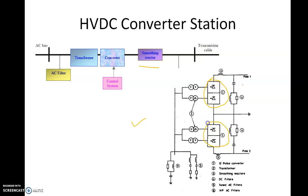These are basically the power electronic switches or converters which convert AC into DC. Then there are transformers — star-delta, with star on one AC side and delta on the other side; it can also be star-star configuration. Why star-star and star-delta? This is to get the 12-pulse operation. Two transformers are used in star-star and star-delta configurations because we need 12-pulse operation.